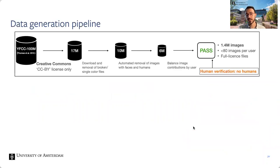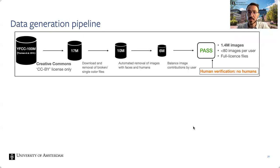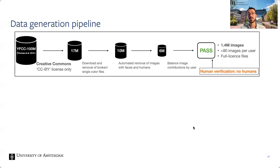To build this dataset we start from a previously published dataset, YFCC 100 million, containing 99 million images with Creative Commons licenses. We take images with the most generous CC-BY license, download and remove broken files, filter by automated face and person detection, which left us at around 6 million images, then further balance image contributions by user. We use the creator username for balancing — you actually need this information to properly attribute each image anyway, so this is a kind of unsupervised curation.